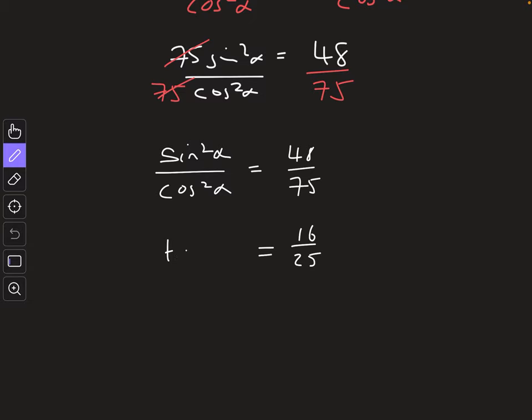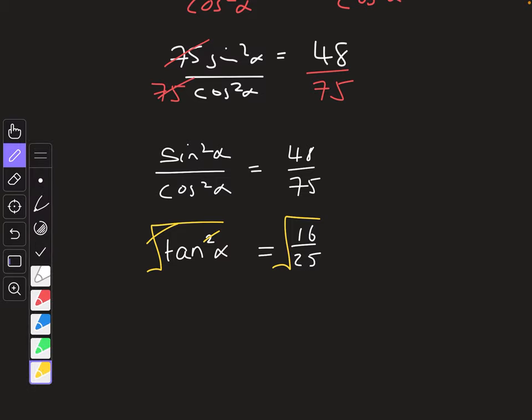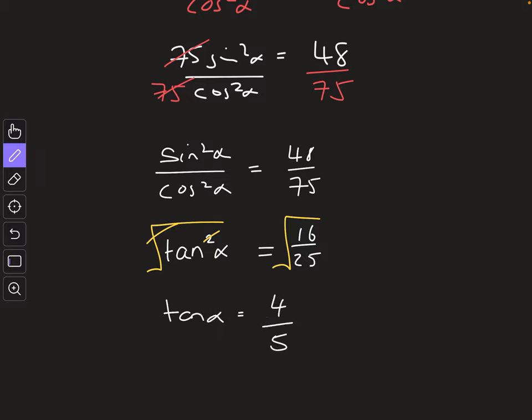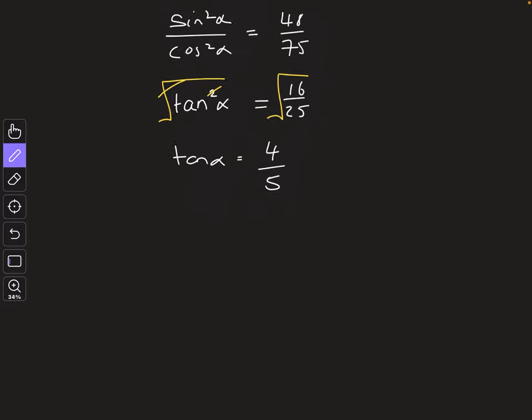So then we're going to say square root both sides. Just showing you what I'm thinking. You don't need to put this stuff in yellow, but it's just to help you kind of understand what's going on. You're going to end up just getting tan alpha here. And the square root of 16 is 4, and the square root of 25 is 5. So we get tan alpha equals 4 over 5.